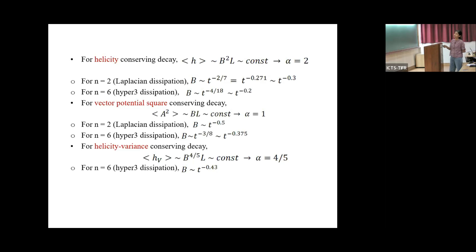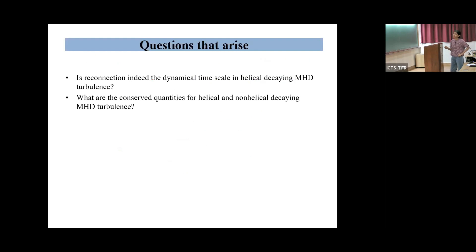Depending on the conserved quantity, we obtain different power laws. If mean helicity is conserved, we obtain a power law of t to the power minus 0.271 for magnetic field decay. For vector potential squared, we obtain t to the power minus 0.5 for N equals 2 (Laplacian dissipation). For helicity variance with N equals 6 (hyper dissipation), we obtain t to the power minus 0.43. The key questions are: is reconnection indeed the dynamical timescale in helical decaying MHD turbulence, and what are the conserved quantities for helical and non-helical decaying MHD turbulence?